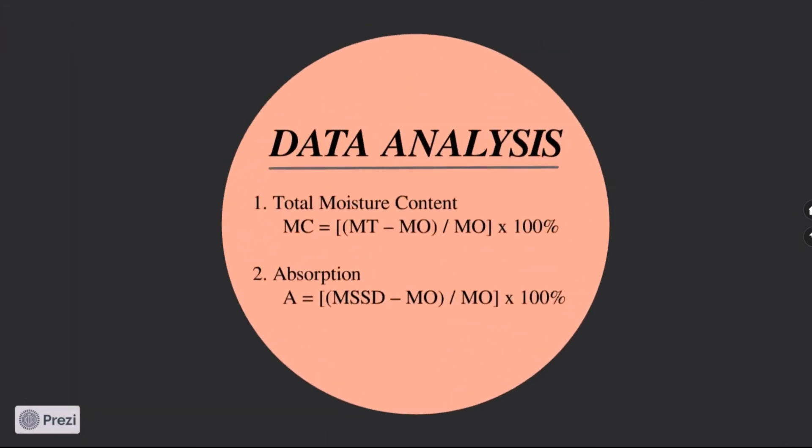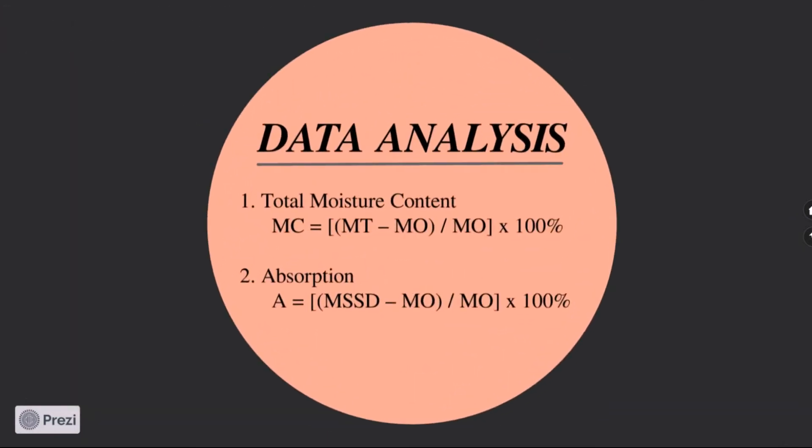In data analysis, we have the formula for total moisture content and absorption. For total moisture content: moisture test sample minus moisture observed all over moisture observed, then multiply by 100%. For absorption: moisture saturated surface dry minus moisture observed, all over moisture observed, then also multiply by 100%.